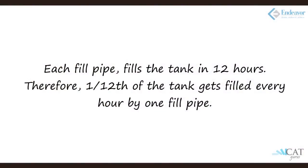Now let's look at them individually. Work done by the fill pipe in 1 hour: they will complete it in 12 hours, so in 1 hour 1 by 12. Let's look at the drain pipes. In 24 hours they will empty the cistern. In 1 hour, 1 by 24th of it is emptied.